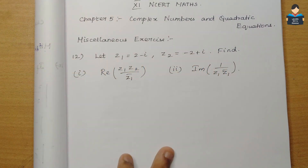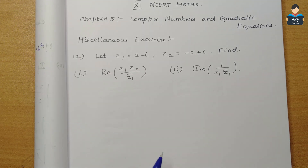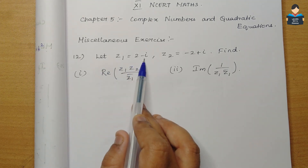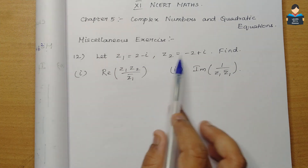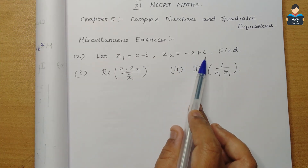Hello everyone, welcome to the channel. In this video we cover 11th standard NCERT Maths Chapter 5: Complex Numbers and Quadratic Equations, miscellaneous exercise, 12th sum. Let z1 equal to 2 minus i, and z2 equal to minus 2 plus i.